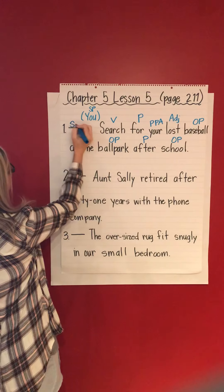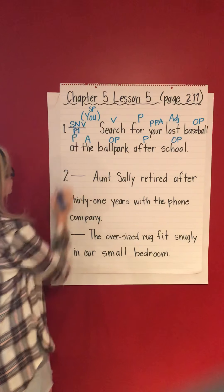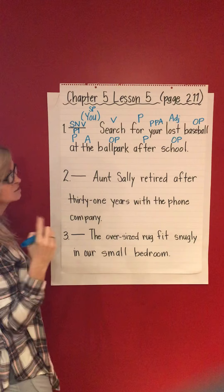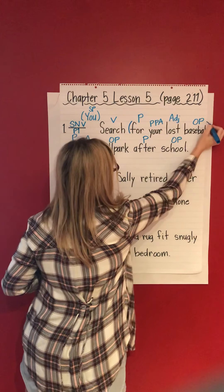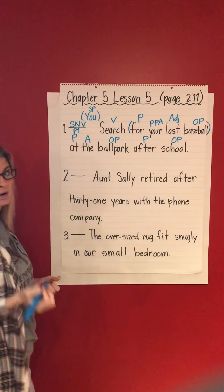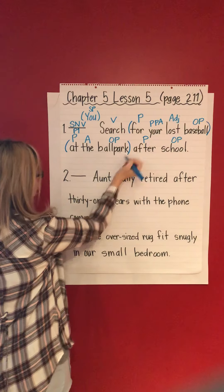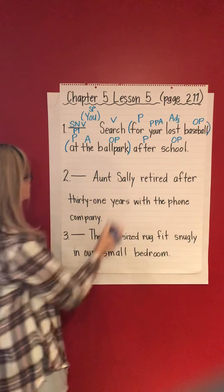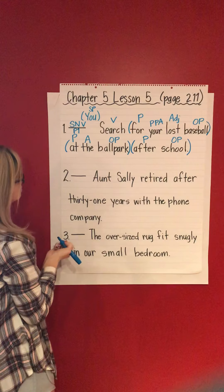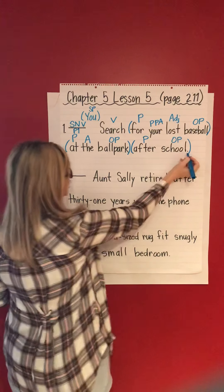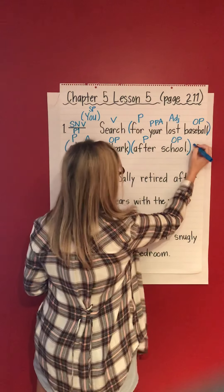Subject, noun, verb — pattern 1. Skill check: let's look for prepositional phrases. 'For your lost baseball' — prepositional phrase. 'At the ballpark' — prepositional phrase. 'After school' — prepositional phrase. Period — command — imperative sentence.